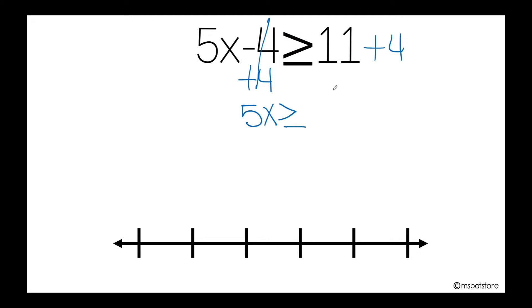And 11 plus 4, which is positive 15. So I still have 5 that shouldn't be there. However, as 5 is multiplying my variable, I need to do the inverse operation, which is division.